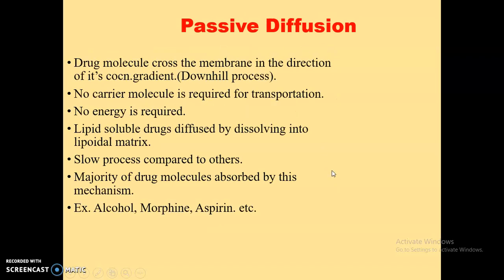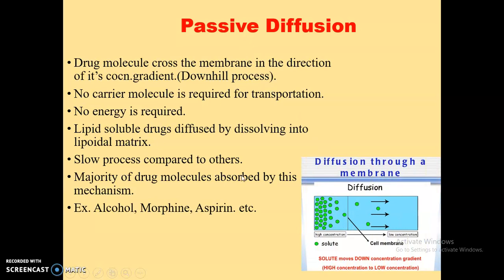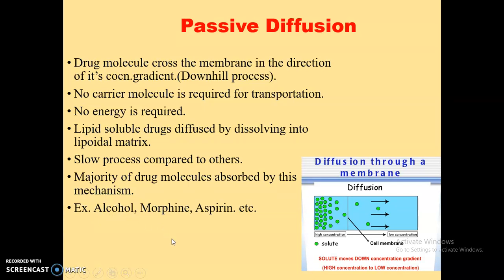The first method is passive diffusion. The majority of drugs get absorbed by this mechanism. Here, drug molecules cross the membrane in the direction of their concentration gradient — that is, drug movement occurs from higher concentration to lower concentration. Hence, this process is called a downhill process. During transportation of a drug molecule from higher to lower concentration, it does not require the help of any carrier molecule; hence, no energy is required. Drugs of lipid-soluble nature diffuse within the lipoidal matrix and get transported on their own. This method is a slow process compared to others. Examples include alcohol, morphine, and aspirin.